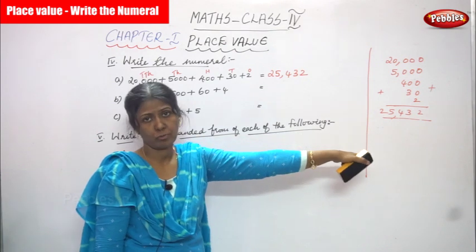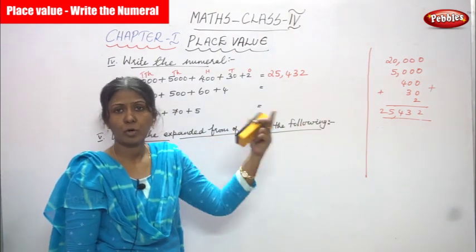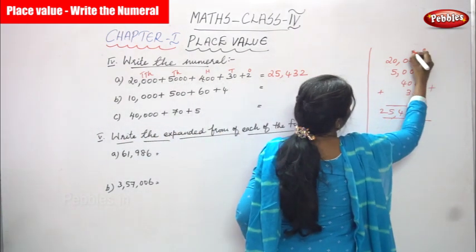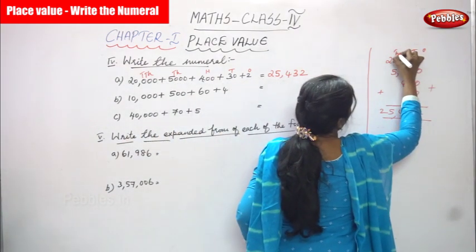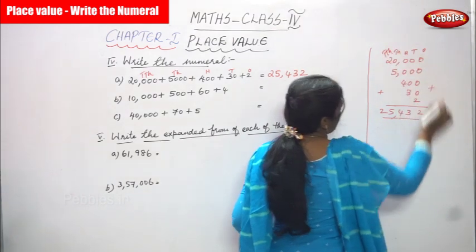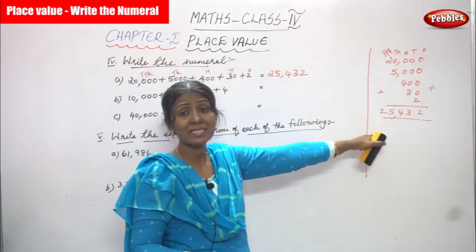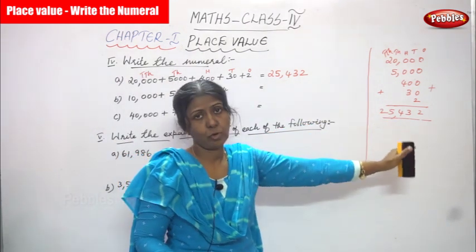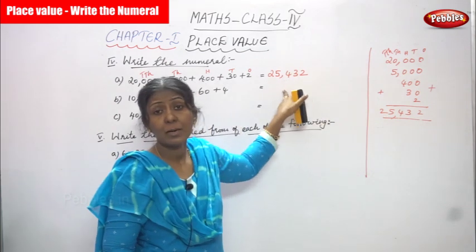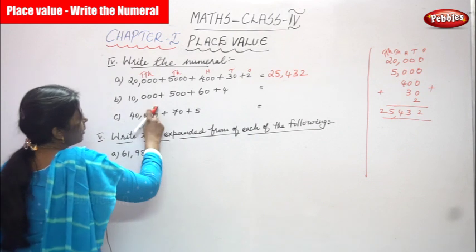If you don't know how to write directly, you have to write in this vertical form. Write all the numbers vertically according to the question: ones, tens, hundreds, thousands, then ten thousands. First you write the place value, then write all the numbers in vertical form, then add everything, and write the proper answer in the particular place.